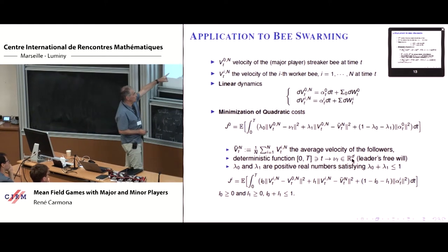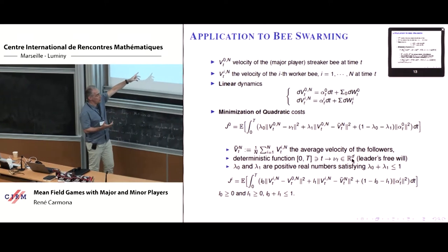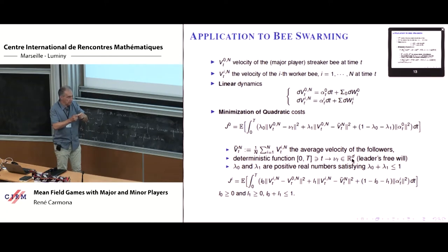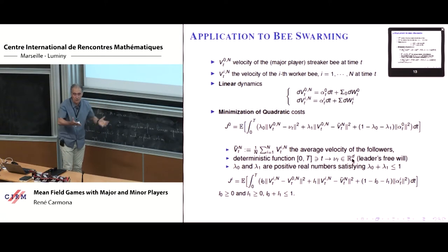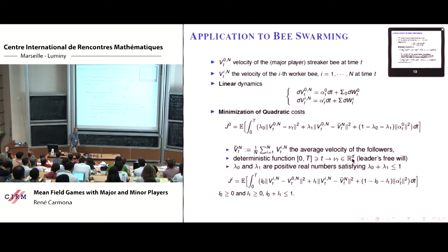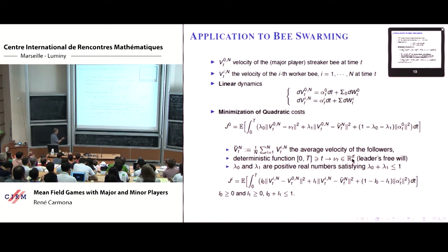The worker bees also have a three-component cost: they want their velocity similar to the striker bee's velocity — they decided to follow it; they want to stay in a group, so their individual velocity shouldn't differ much from the group's average velocity; and finally they want to end up where they want to be without getting too exhausted. That's the finite-player game. You write the limit as N→∞ as a mean field game.